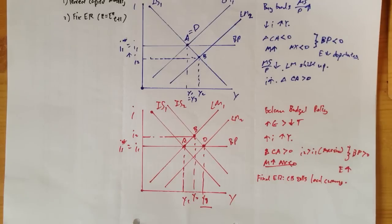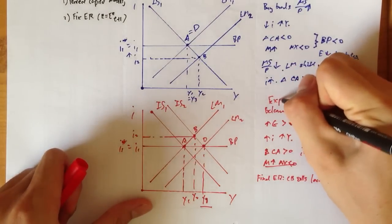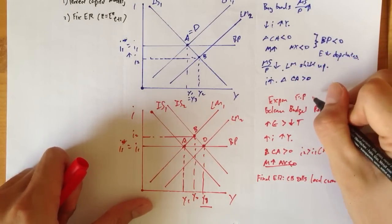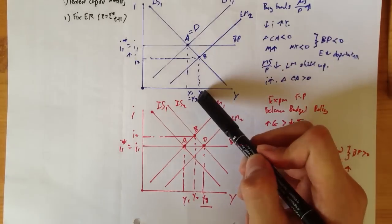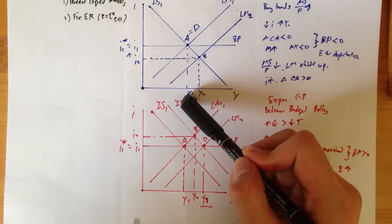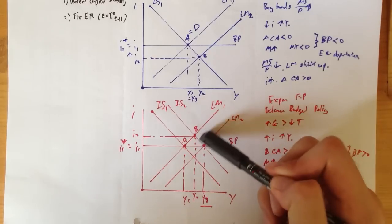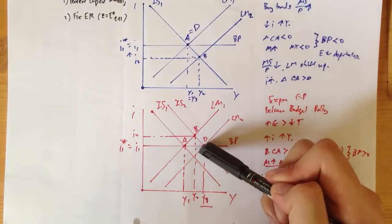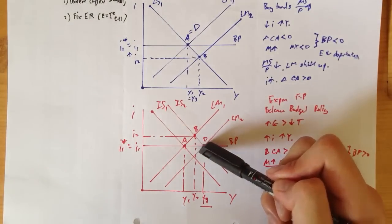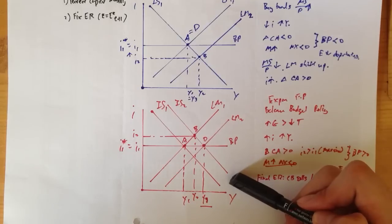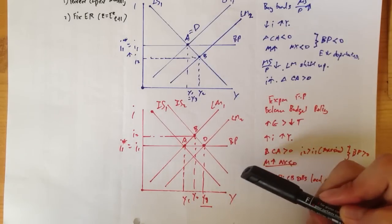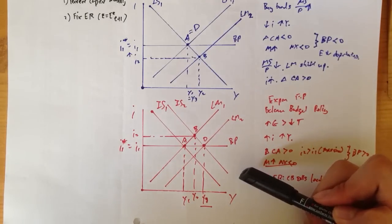So we can see that an expansionary fiscal policy is actually more effective in increasing output. Looking at the previous monetary policy diagram, we had output back at Y1. But here we have an increase in output at Y3, while the interest rate stays the same. This expansionary fiscal policy is actually effective in increasing output for the economy as a whole. That is pretty much my analysis of the Mundell-Fleming model. Thank you.